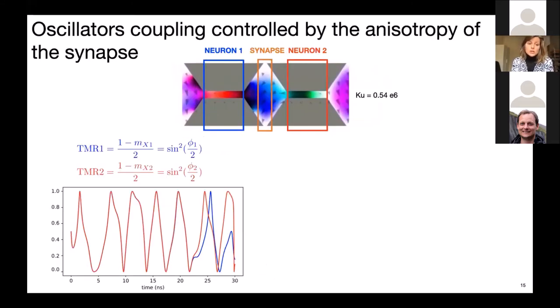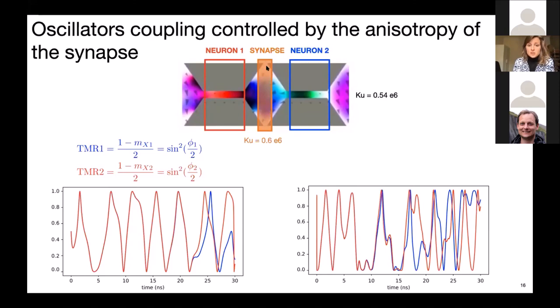Another approach is to continuously drive these oscillator neurons and to tune the coupling between them by modifying the weight of the synapse that is implemented by this island. So here you see that the oscillators oscillate in phase, the red one and the blue one for about 22 nanoseconds, and then they start de-phasing. And if we modify the anisotropy in this island, then they de-phase much faster after only about 10 nanoseconds.